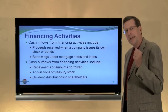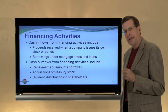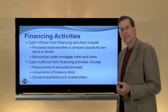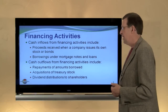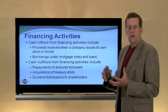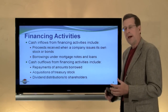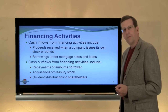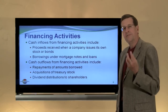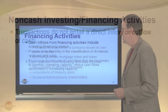Do note that interest received, interest paid, and dividends received are operating activities, but dividends paid is a financing outflow. The classification of interest and dividends is debatable, but under U.S. GAAP there is a defined scheme: interest received, interest paid, and dividends received are classified in the operating activities section, while dividends paid is considered to be financing.